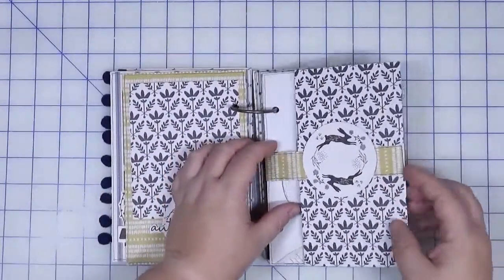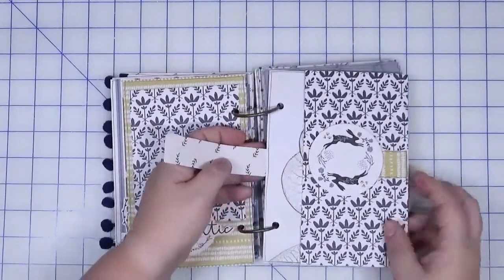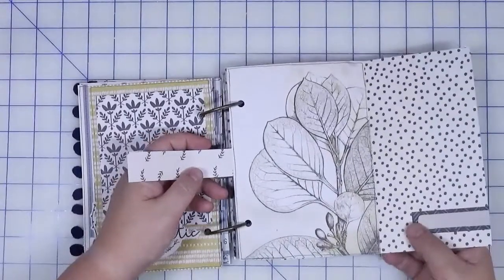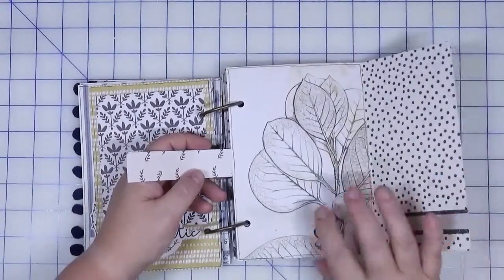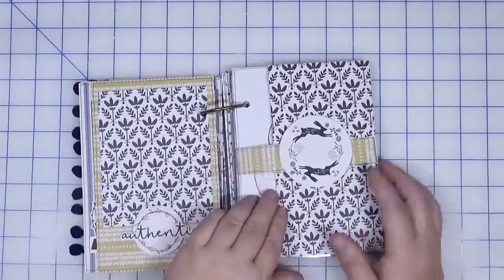This side here is a fold out, but it does have a belly band that's securing it. You open it up, lots of room for photos and journaling. How pretty is this paper? And that just tucks back in.